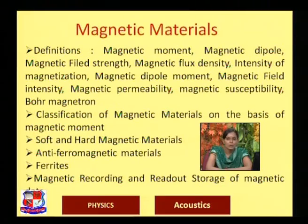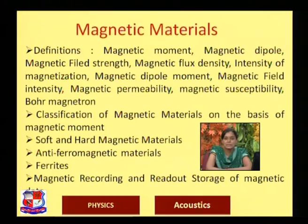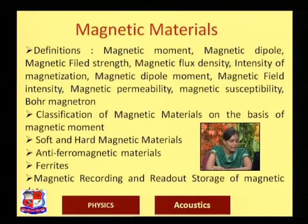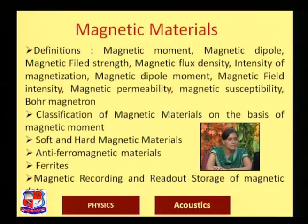We are also going to classify magnetic materials on the basis of magnetic moment — there are five major types. We will study the difference between soft and hard magnetic materials and their applications, ferrites, antiferromagnetic materials, and magnetic recording and readout storage of magnetic data.